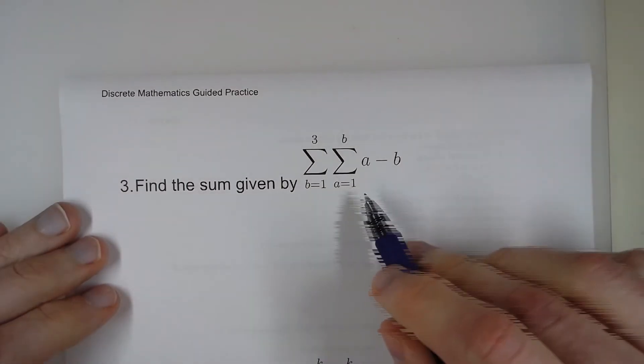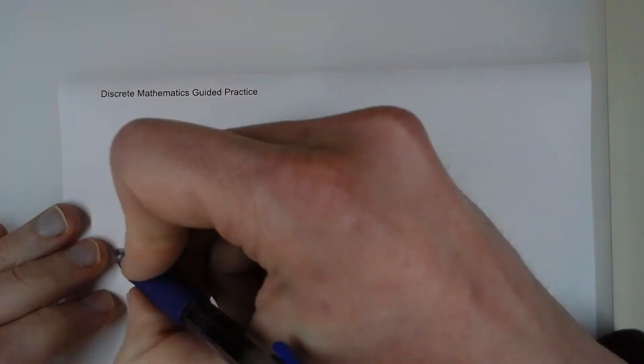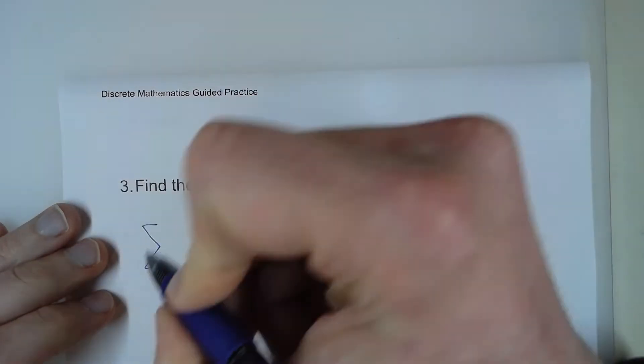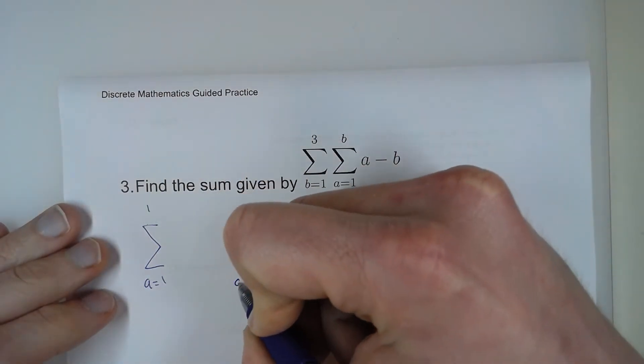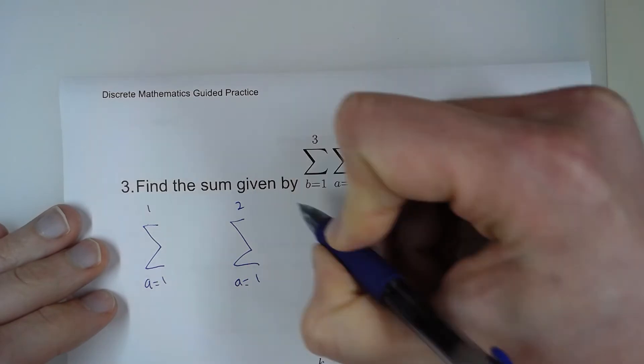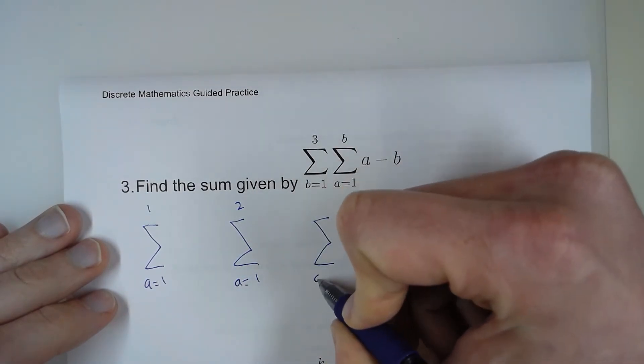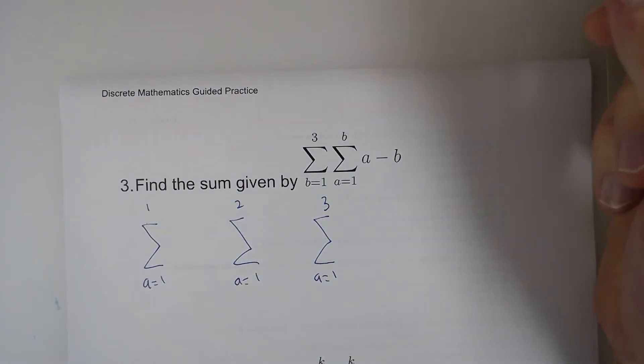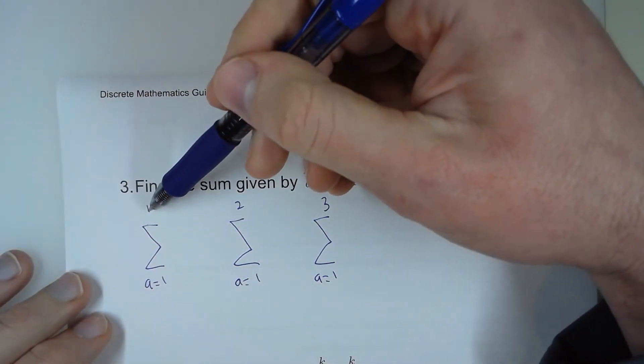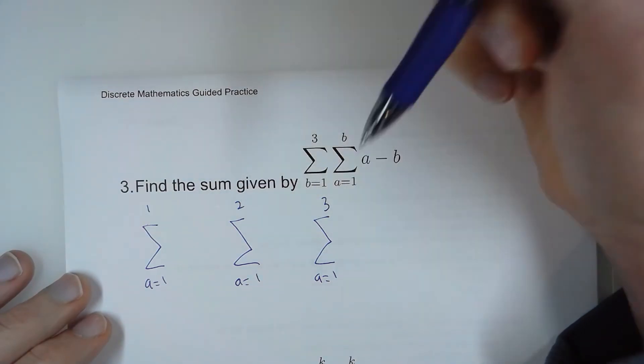For this one, we're going to write this as three different sums. a equals 1 to 1, a equals 1 to 2, and a equals 1 to 3. So what I've done is I've plugged 1 in for b, 2 in for b, and 3 in for b.